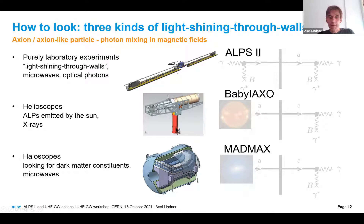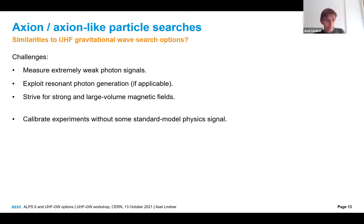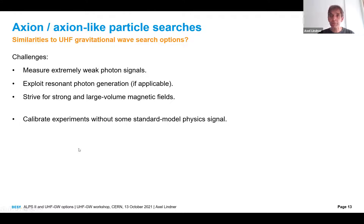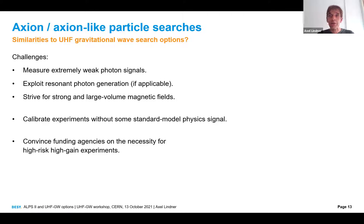Baby IAXO for solar axions starts construction early next year, and for the MADMAX haloscope we are just in a prototype phase. There are very obvious similarities to ultra high frequency gravitational wave searches: we have to measure extremely weak photon signals, exploit resonant photon generation if applicable, and strive for strong large-volume magnetic fields. Another commonality is that we have to calibrate experiments without any standard model physics signal — it's easy to miss a signal due to miscalibration. And of course we need to convince funding agencies for such high-risk high-reward experiments.